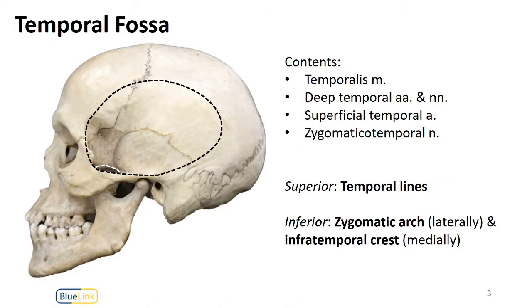The temporal fossa tends to be a little bit more straightforward to imagine the space it occupies. One of the first things you want to think about is those superior and inferior temporal lines, which are the attachment points for the temporalis and the temporalis fascia. Running up and along here, that is the superiormost aspect of the temporal fossa. Inferiorly it ends at the zygomatic arch laterally and at the infratemporal crest medially.